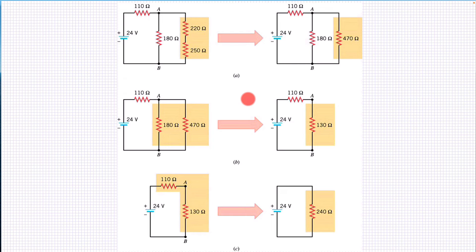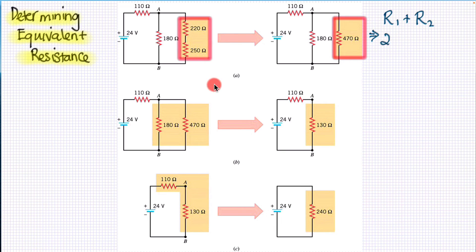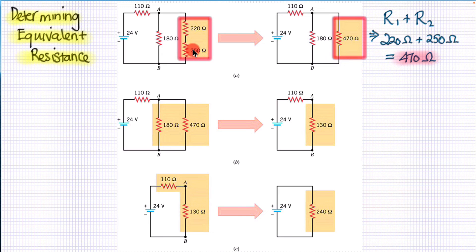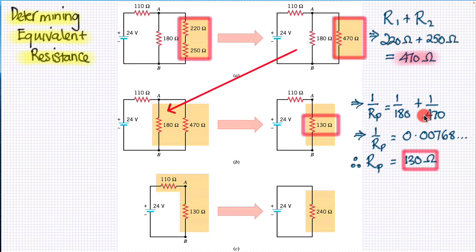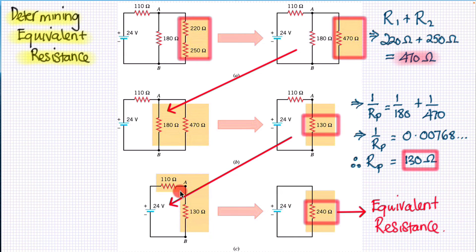Here is an example of determining equivalent resistance from real values. In the first case we have a series branch — we simply add the two resistors together to give 470 ohms, then redraw the circuit diagram to reflect this equivalent resistance. We then find the equivalent resistance of a parallel branch by applying the parallel formula, which gives an equivalent resistance of 130 ohms. In another section, two resistors in series are added together to give the equivalent resistance for that part of the circuit.